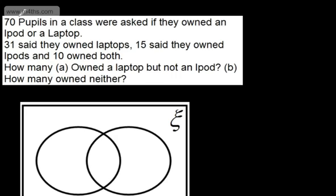We can use Venn diagrams to solve problems. In this question, 70 pupils in a class were asked if they owned an iPod or a laptop. 31 said they owned laptops, 15 said they owned iPods, and 10 owned both. We need to find: A — how many owned a laptop but not an iPod, and B — how many owned neither.